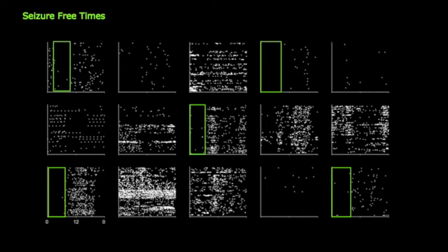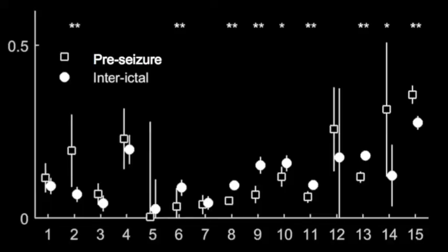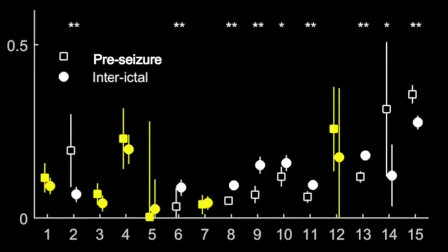The relationship between spike rate and seizures was highly patient specific. This figure shows a comparison in spike rate between interictal and pre-seizure times. The x-axis indicates different subjects and the y-axis is a normalized spike rate. Three patients showed a significant pre-seizure increase in spike rate. Six patients showed a significant decrease, and no significant change was found in the remaining six patients.